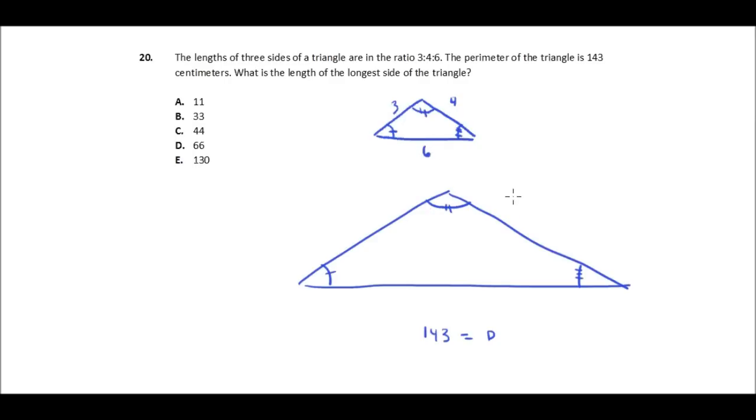And then I can set up essentially a ratio of my own or a pair of equal fractions that allow me to determine what this side, the longest side, of my large triangle is. Because I know that the longest side of my smaller triangle is 6. And I also know the perimeter of my smaller triangle because I'll just add up the sides. 6 plus 4 is 10, plus 3 is 13.